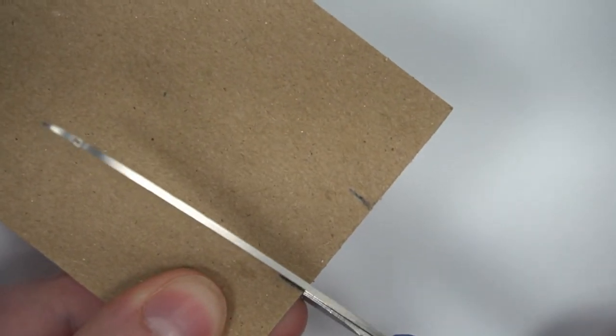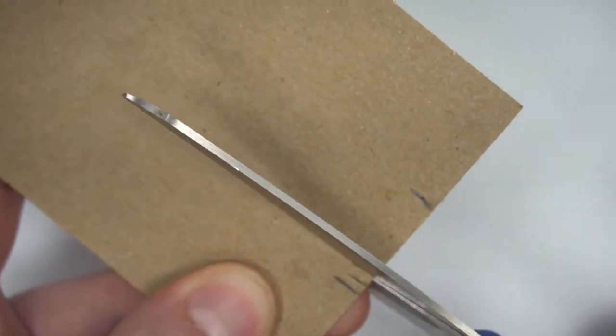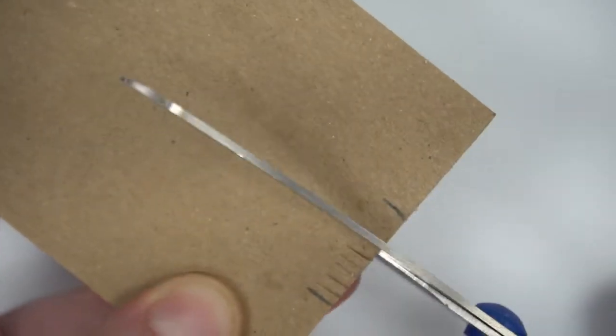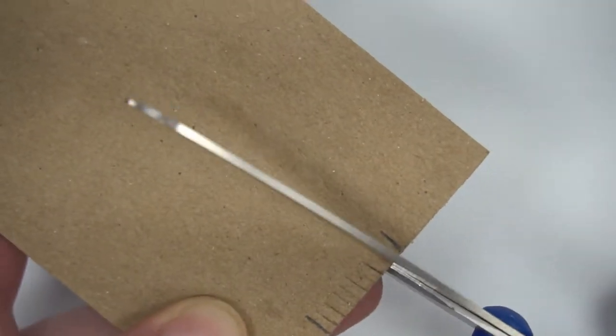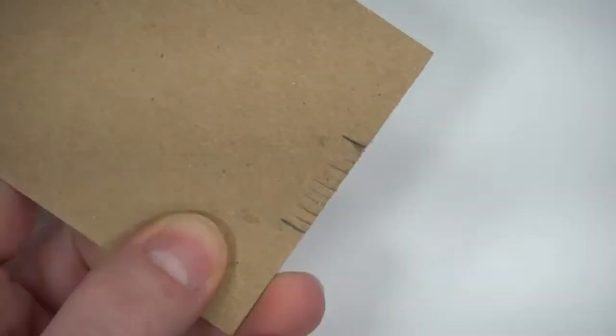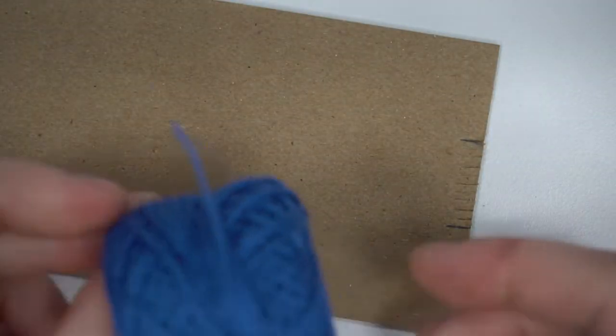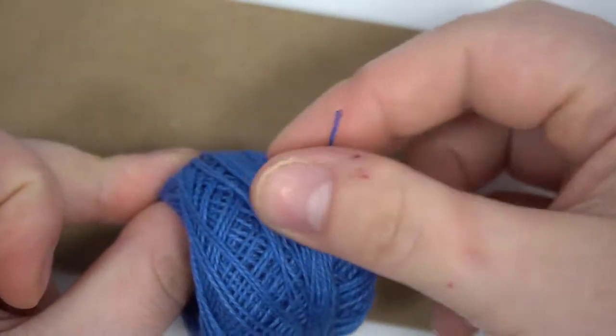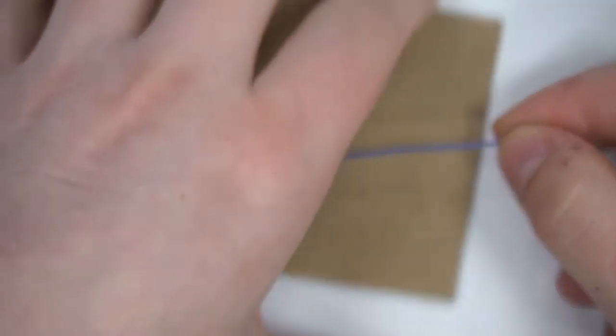And then flip your chipboard over to the other side and go ahead and make about the same cuts. If you make sure that all your cuts are about a millimeter apart, then you should end up with about the same number. But weaving is very forgiving, so don't worry about it too much.